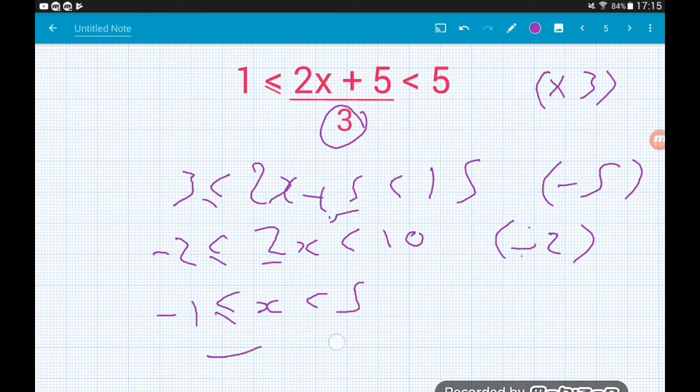So on a number line, find minus 1, find positive 5. The 5 has a hollow circle. The minus 1 has a coloured in circle. And then we join those up with a line. There we go guys, that's how we attack double or compound inequalities. Hope it's useful.